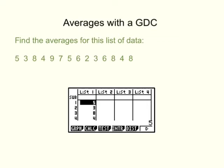In this video, we're going to look at finding averages using our Graphics Display Calculator, our GDC. We're going to look at three types of data that we can do in our GDC. First of all, we're going to look at a list of data and how to find the averages from it. So, let's get on with the example.